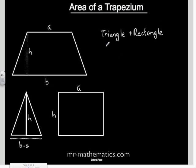So the area of a triangle is half a base times a height so half of B minus A times H plus the area of a rectangle AH.